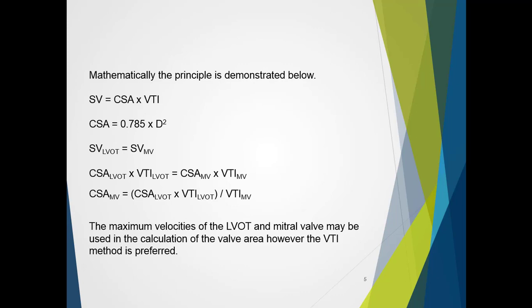Methodically, we can present it as such. We know stroke volume is equal to cross-sectional area times VTI. The cross-sectional area can be broken down to 0.785 times the diameter squared. Stroke volume through one equals stroke volume through the other. And expanding them out, we get this. And then basically, we just rearrange the formula so it can work out the cross-sectional area of the mitral valve.